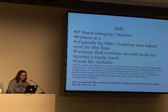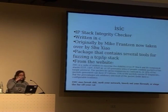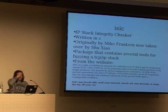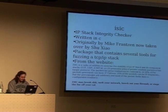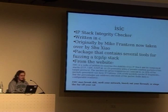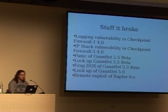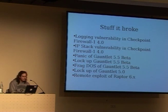Next one's ISIC — a bit older, maybe 1998. It's basically an IP stack integrity checker. It's not called a fuzzing tool because back then people weren't calling things fuzzing tools, but it is a fuzzing tool. It's written in C by a guy called Mike Franz. Basically it generates IP, TCP, UDP, and even ICMP data that looks valid but really isn't. The code has a warning: may break shit, melt your network, knock out your firewall, or singe the fur of your cat. It's broken a lot of very high-profile stuff — you don't want your firewall suddenly quitting.